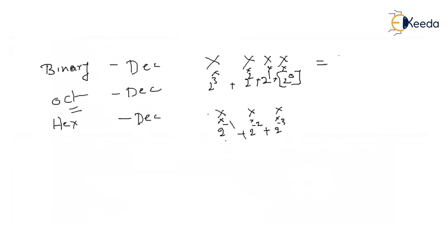Octal weights are different from binary. For an octal number xxxx, the weights are 8^0, 8^1, 8^2, 8^3 — multiply by corresponding octal digits and add.